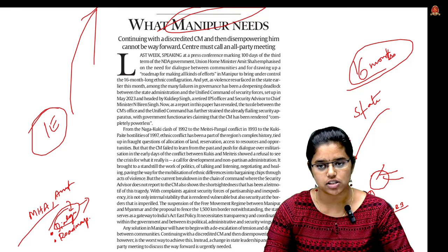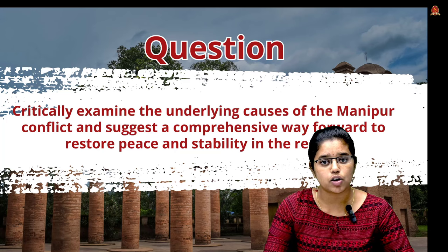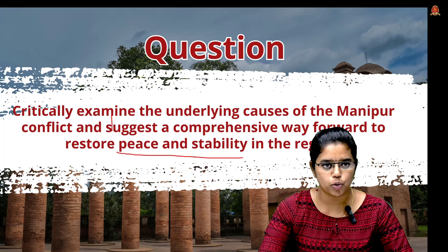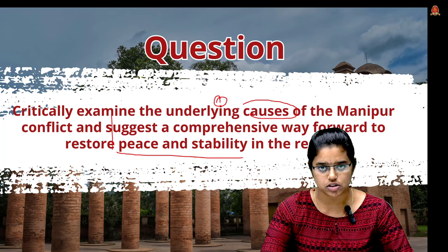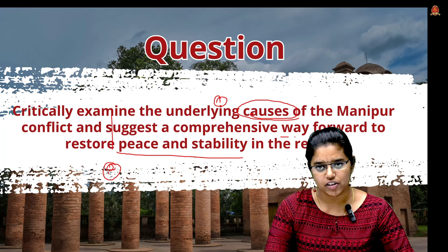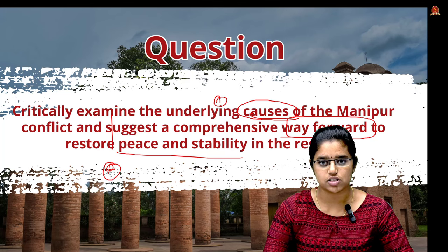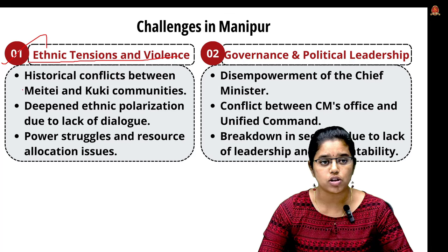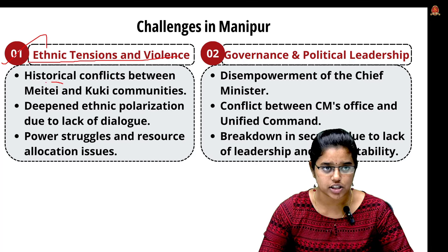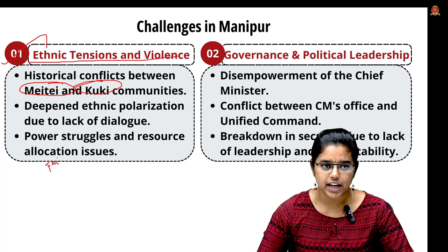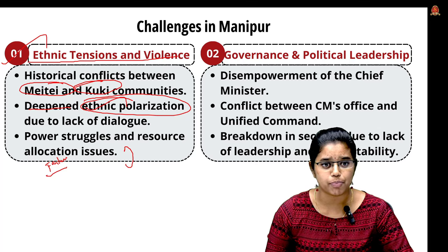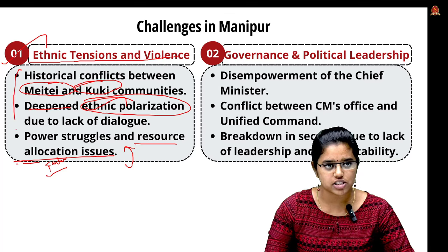The mains question is: 'Critically examine the underlying causes of the Manipur conflict and suggest a comprehensive way forward to restore peace and stability.' This has two parts — identifying the causes and suggesting a way forward. The first challenge is ethnic tensions and violence: for decades, conflicts have occurred between ethnic groups such as the Meiteis and Kukis due to failure of dialogue, which has deepened ethnic polarization. Negotiations have turned into power struggles and resource allocation issues.